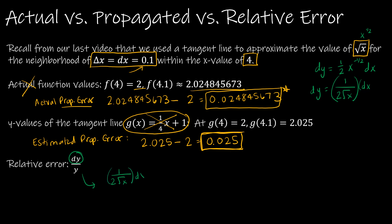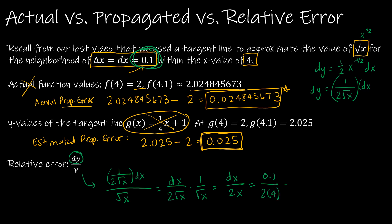So dy is 1 over 2 radical x dx. In my numerator I write 1 over 2 radical x dx, and in my denominator I put radical x. Simplifying: 1 over 2 radical x divided by radical x is like multiplying by 1 over radical x, giving dx over 2x, since radical x squared equals x. Plugging in values: dx is 0.1 and 2x is 2 times 4, which is 8. So 0.1 divided by 8 equals 0.025. That is the relative error.